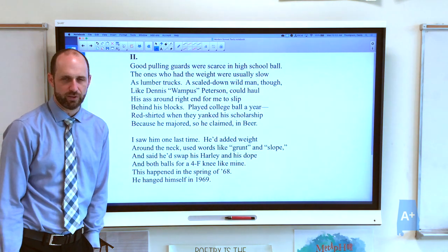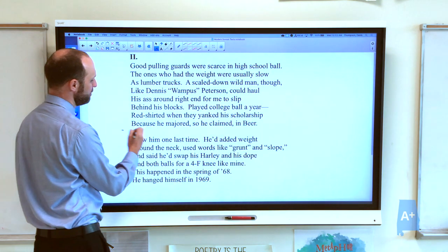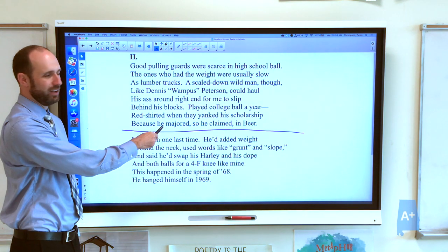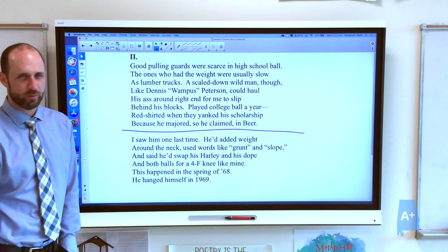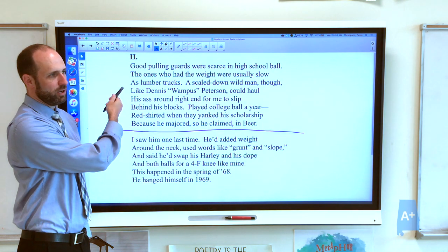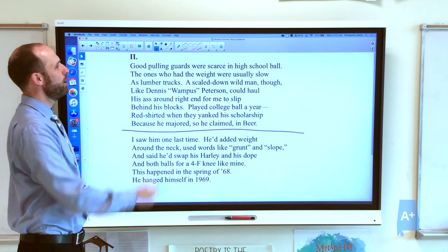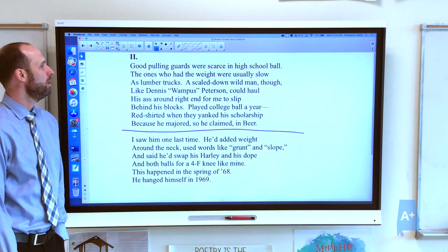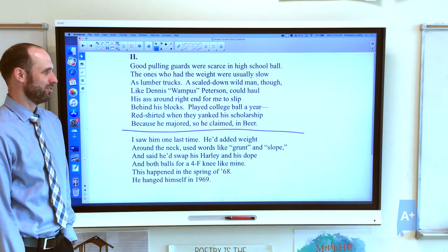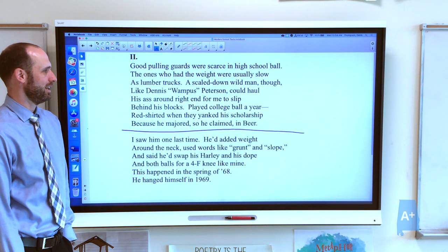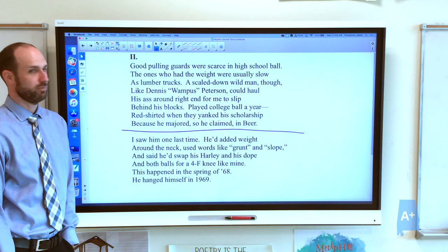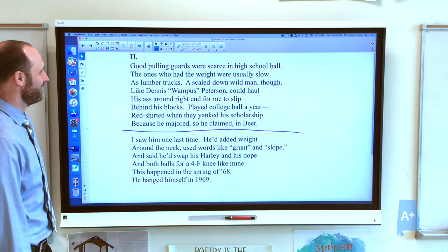He shows up in the middle of the poem when we learn about Dennis Wampus Peterson, who's a football player. Again, we have the same pattern. Art is all about patterns. We have the life of Dennis Wampus Peterson. He has a nickname. And then we have the death. And our speaker is going to show up in the poem. And we're going to get more clues about when this poem is set and what the poem is really up to. It opens with just acknowledging a fact about football, that good pulling guards were scarce in high school ball. The ones who had the weight were usually slow as lumber trucks. A scaled down wild man, though, like Dennis Wampus Peterson, could haul his ass around right in for me to slip behind his blocks. Played college ball a year. Red shirted when they yanked his scholarship because he majored, so he claimed, in beer.